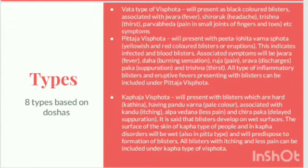The blisters develop on wet surfaces — the skin of kapha type individuals is wet and predisposed to the formation of blisters. It is associated with kandu and alpavedana. The main characteristic features of kaphaja Vispota are kandu and alpavedana.